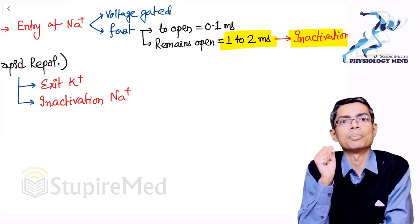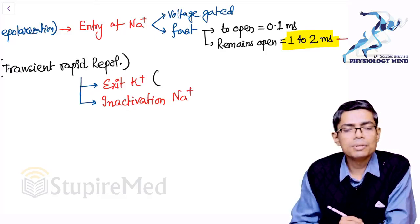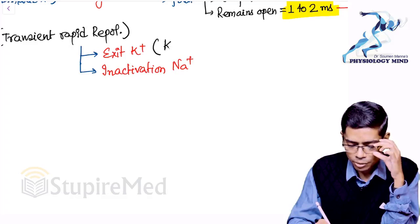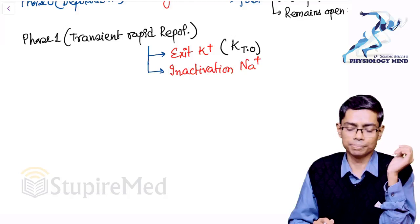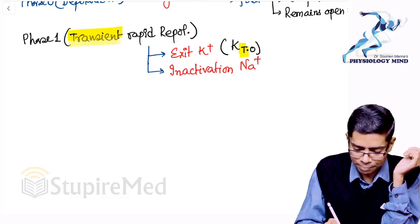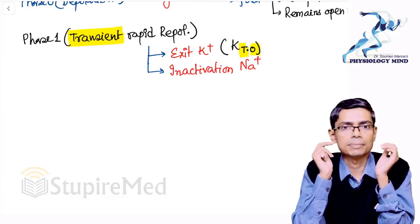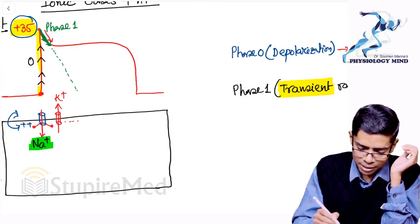The potassium channel responsible for Phase 1 is the KTo channel — K for potassium, T for transient, O for outward movement. This is the transient outward potassium channel described in books like Berne and Levy. It is important for MCQs. So Phase 1 = transient rapid repolarization driven by the KTo (transient outward) potassium channel.